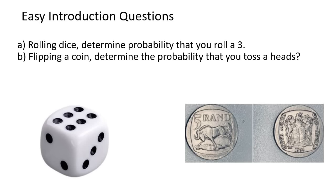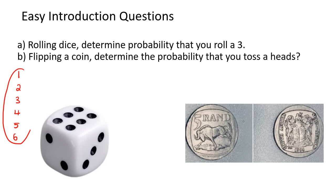An easy introduction would be something like this — we've all rolled a dice before. When you roll a dice, what could you roll? You could roll a one, two, three, four, five, or a six. So how many different things could you roll? Well, there are six different options — six different things that you could roll.